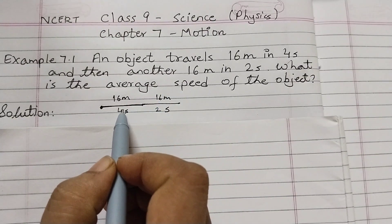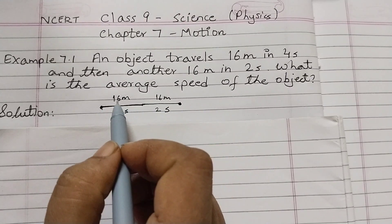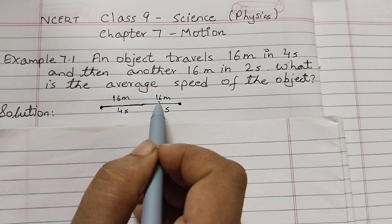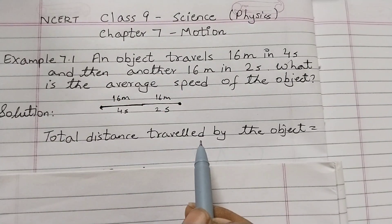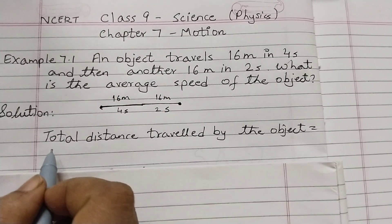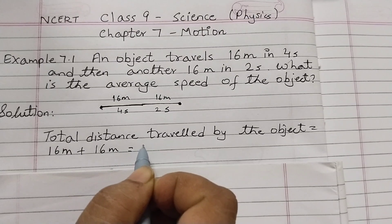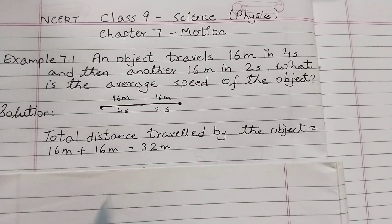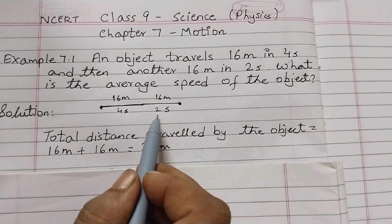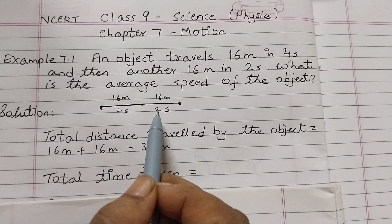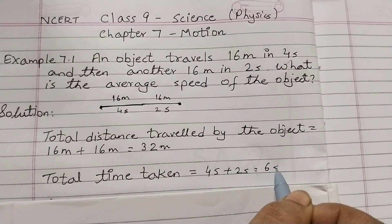The object is traveling from this point to this point. We can see the distance is 16 meters first and then again 16 meters, so the total distance traveled is 16 meters plus 16 meters, which equals 32 meters. The total time taken is 4 seconds plus 2 seconds, which equals 6 seconds.